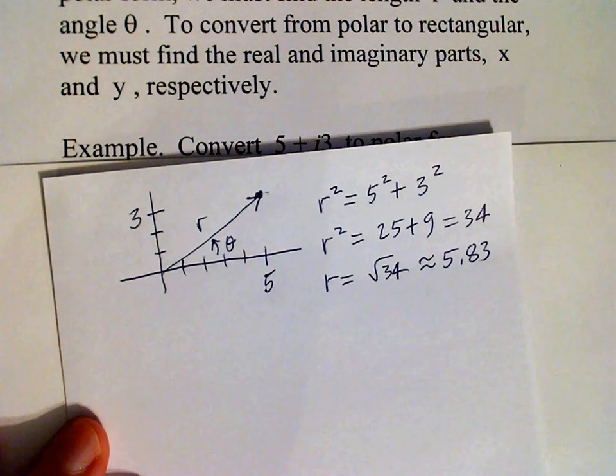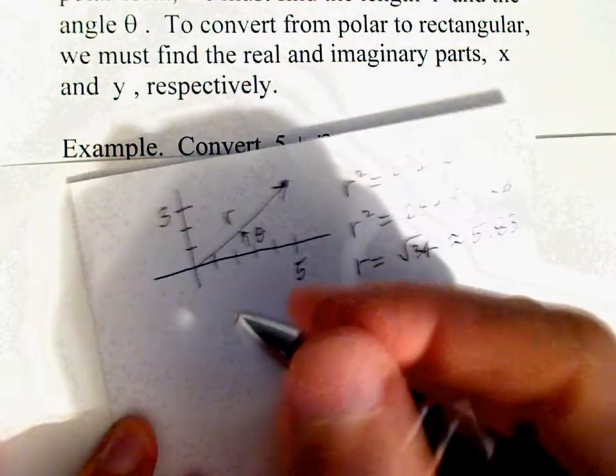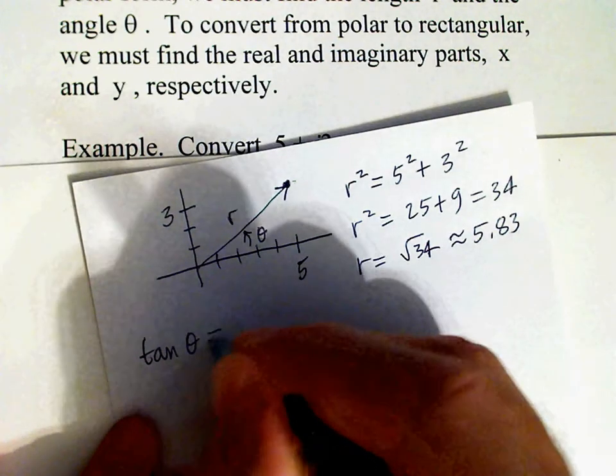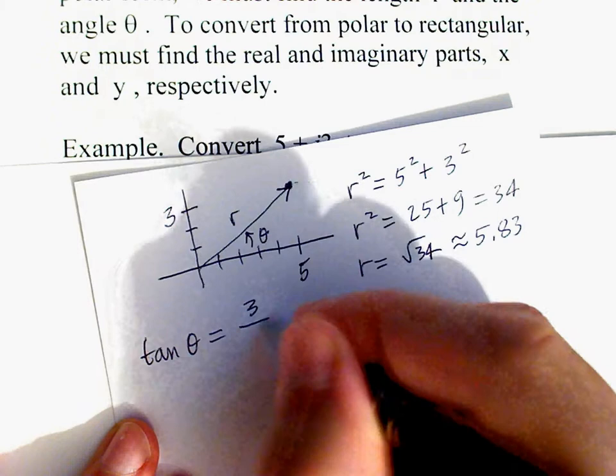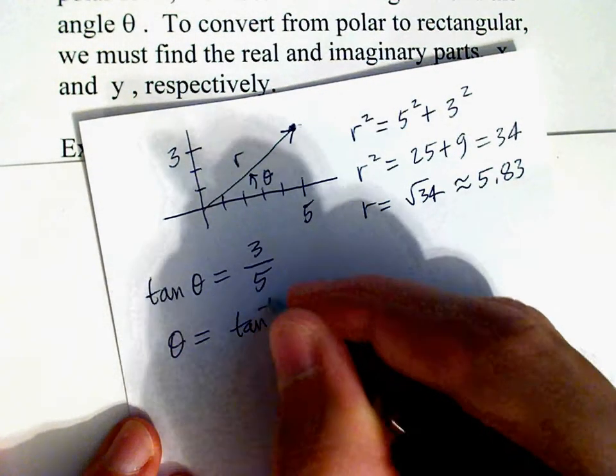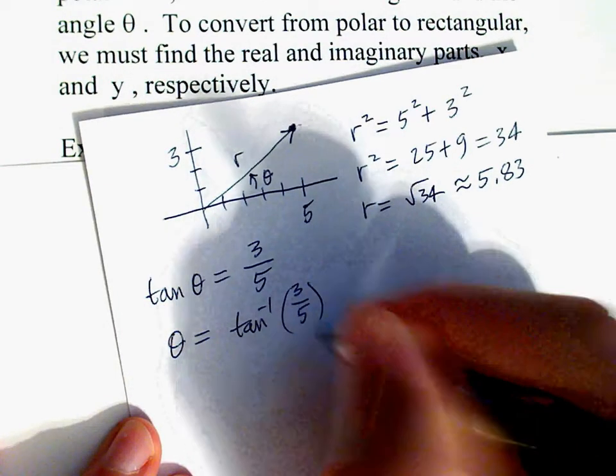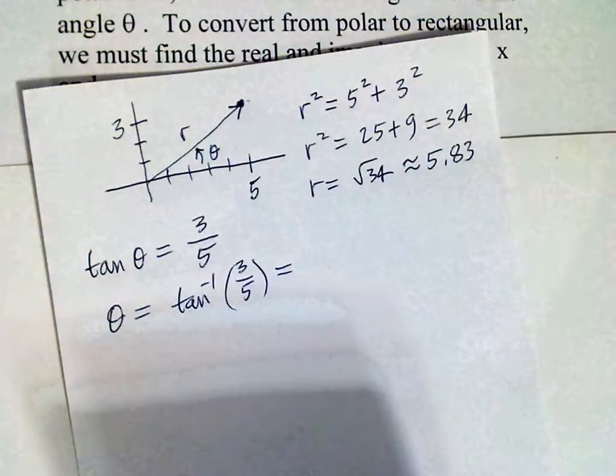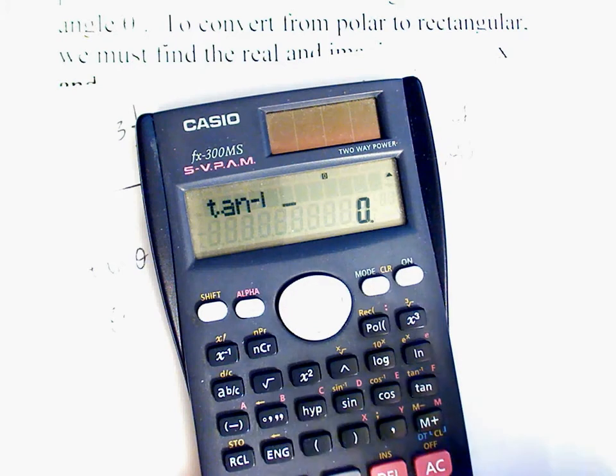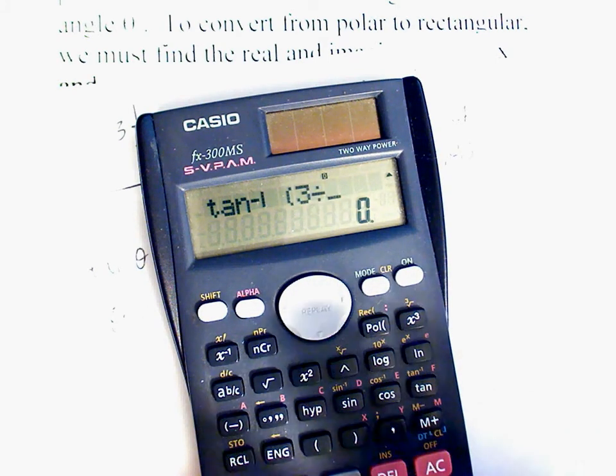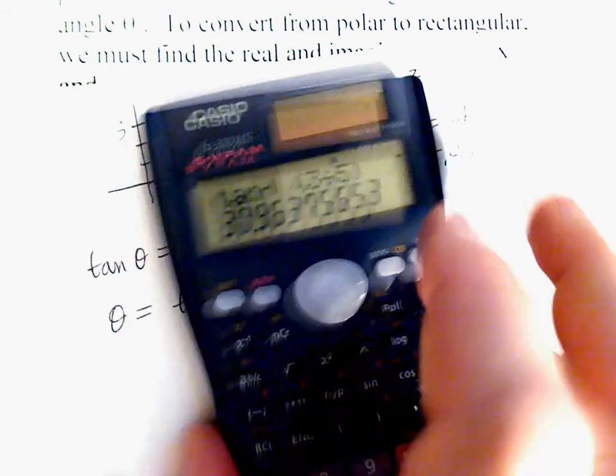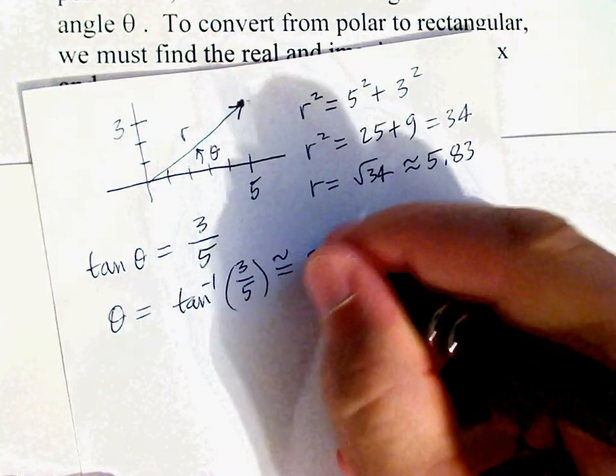Now to find the angle, probably the easiest way is to use the inverse tangent. We have tan(θ) is 3/5, so that means θ equals the inverse tangent of 3/5. Inverse tangent of 3/5, and the answer is about 31 degrees.